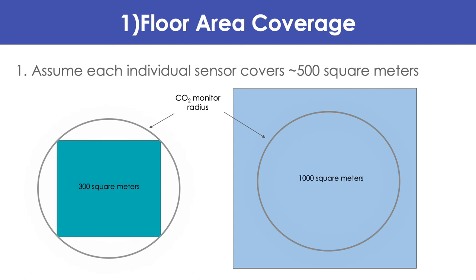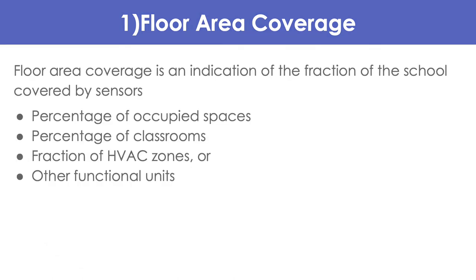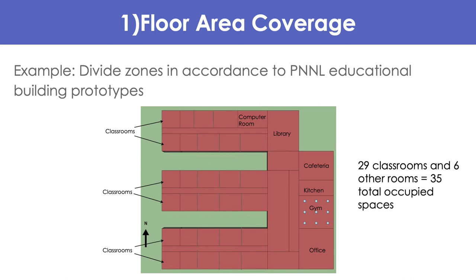For example, at least one sensor in each HVAC zone or enclosed room could suffice for adequate coverage, provided those zones or rooms are smaller than 500 meters squared each. Depending on the school's measuring goal, users can divide their school into zones such that their monitor covers a percentage of occupied spaces, classrooms, or HVAC zones. Users can divide their school in accordance with the PNNL education building prototypes, calculating floor area coverage as a fraction of rooms measured compared to the total number of rooms.